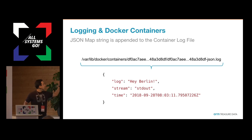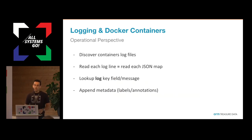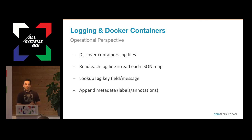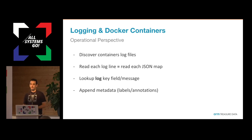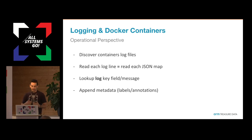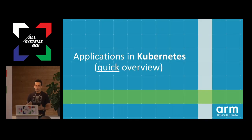This gets stored in /var/lib/docker/containers, the hash of the container, and so on — each message is appended to the same file. From an operational perspective, if you want to do logging you need to understand where the logs are located. Once located, you need to start parsing these log files created by the Docker engine, then start looking up for special key fields inside the JSON maps that Docker generated, and maybe append some metadata on it.